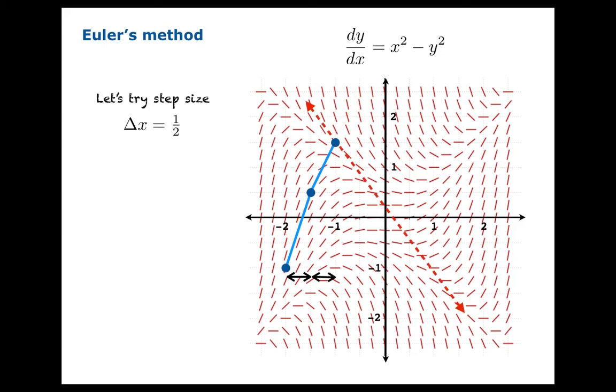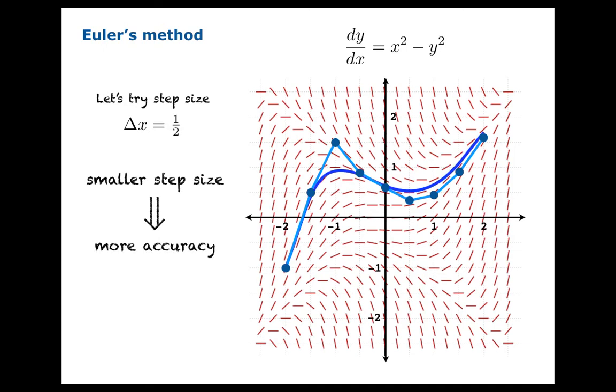Find the new slope. Repeat the process. And now we'll just finish briefly. Notice that already we have marked improvement. Our approximation looks a lot closer to the actual solution. And the moral here is a smaller step size means more accuracy.